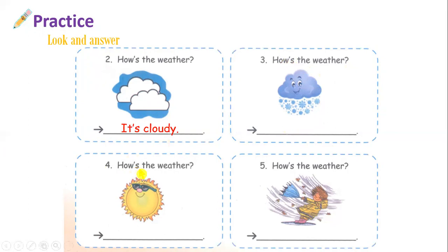Number four — how's the weather? Chúng ta nhìn vào bức tranh số bốn và chúng ta sẽ thấy biểu tượng mặt trời, tức là trời có nắng. Và khi được hỏi là how's the weather, chúng ta sẽ trả lời thế nào? Can you tell me your answer? Trời có nắng là sunny. Còn đáp án của câu hỏi how's the weather là it's sunny.